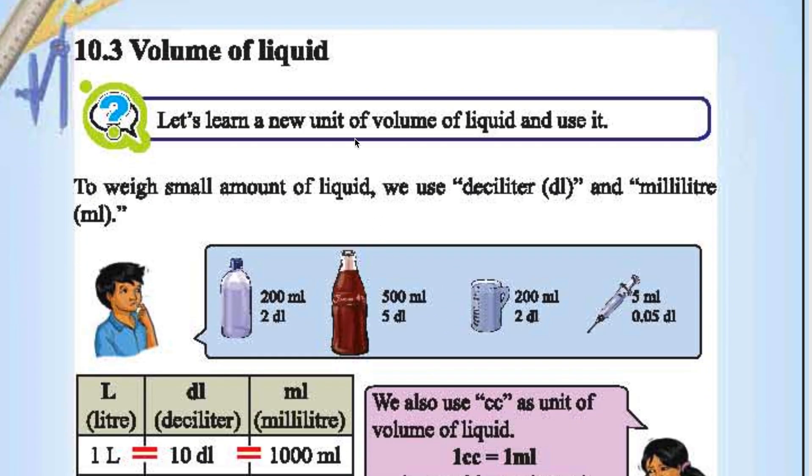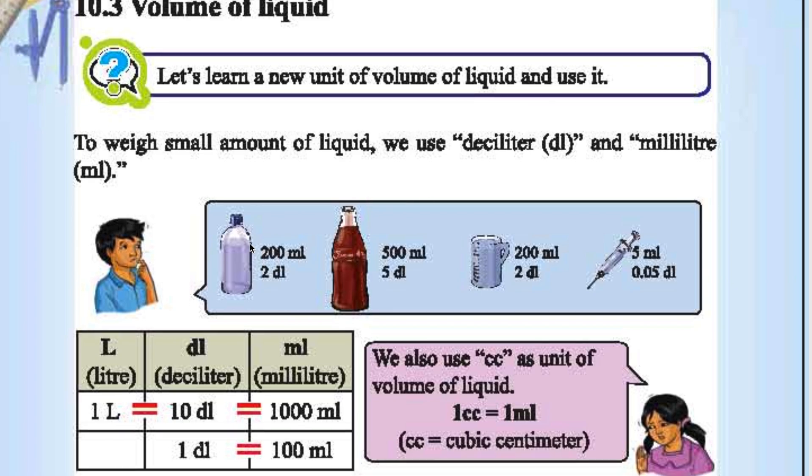Let's see the volume of liquid. The unit of volume of liquid and its use. To measure small amounts of liquid we use deciliter and milliliter. 200 milliliter is 2 deciliter. 500 milliliter is 5 deciliter.